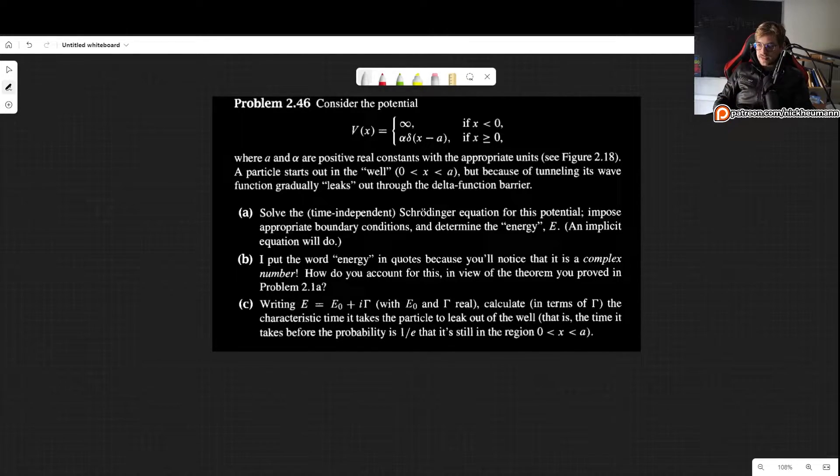Now this problem states the following. Consider this potential, which is infinity if x is smaller than 0, and alpha times the delta potential of x minus a if x is greater or equal to 0. Here a and alpha are positive real constants with the appropriate units, and the particle starts out in the well, between 0 and a, but because of tunneling its wave function gradually leaks out through the delta function barrier.